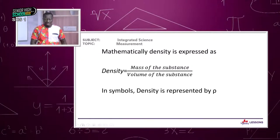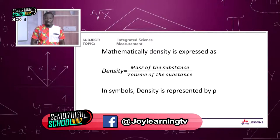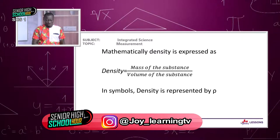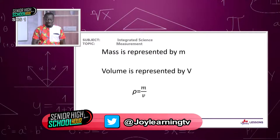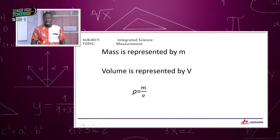Mathematically, density equals mass of the substance divided by the volume of the substance. To make the expression simple, we use letters: density is represented by the Greek letter rho, m to represent the mass of the substance, and v to represent the volume. So rho equals m divided by v.